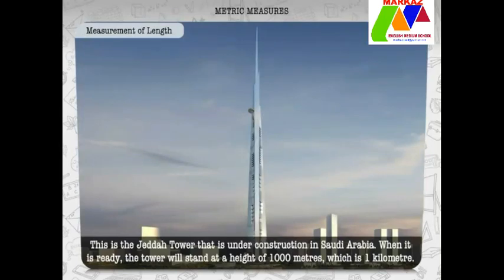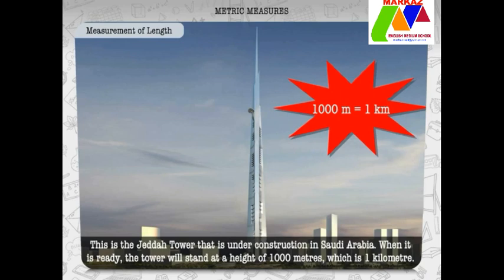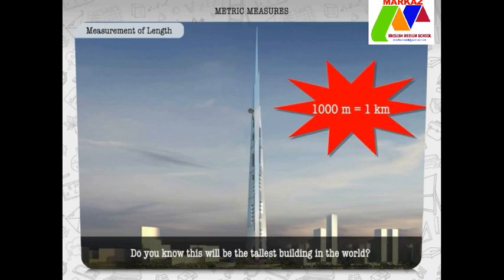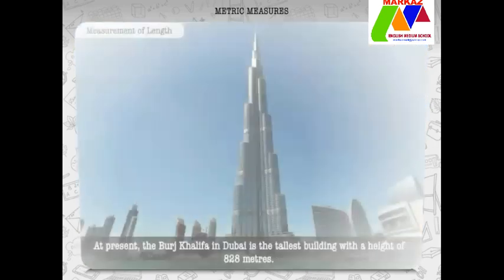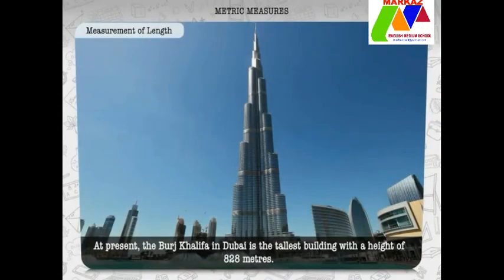This is the model of Jeddah Tower that is under construction in Saudi Arabia. When it is ready, the tower will stand at a height of 1000 meters, which is 1 kilometer. Did you know that this will be the tallest building in the world? At present, the Burj Khalifa in Dubai is the tallest building with a height of 828 meters.